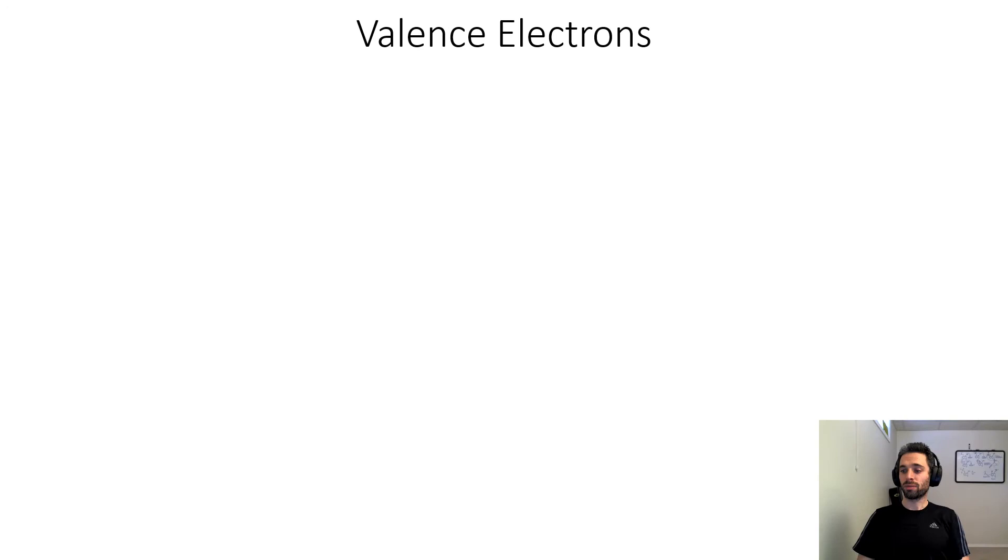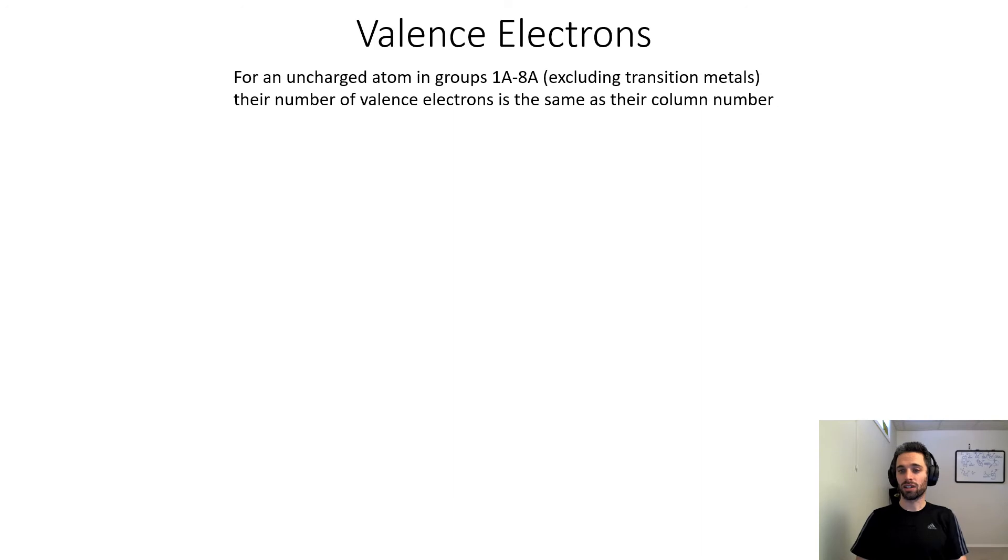Furthermore, we can determine the number of valence electrons. There's a pretty easy method. As we said, the periodic table is a resource that tells us a plethora of information, so we'll actually get it from there. For an uncharged atom in groups 1A through 8A, excluding transition metals, their number of valence electrons is the same as their column number.